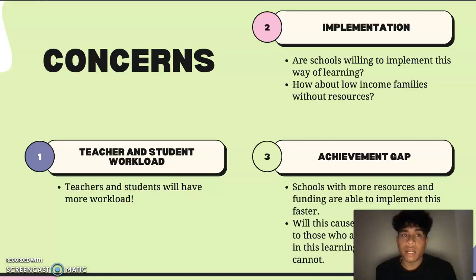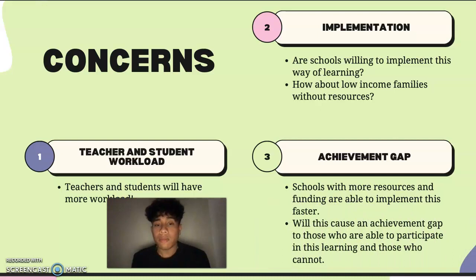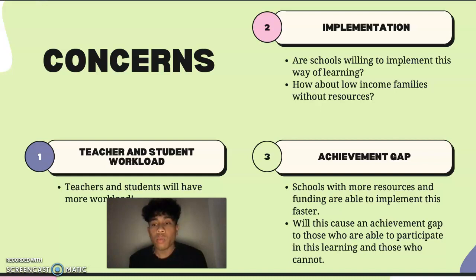Lastly, my concern is about the achievement gap. Since schools will have to implement this, they will need to receive more funding. Schools with more resources and funding are able to implement this much faster. However, for those schools that do not have the same resources or funding, will this cause an achievement gap? Will students who are currently doing flipped classrooms and performing much better create an achievement gap for students not experiencing this way of learning?